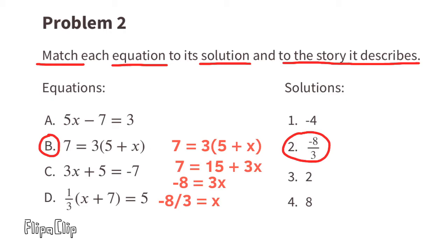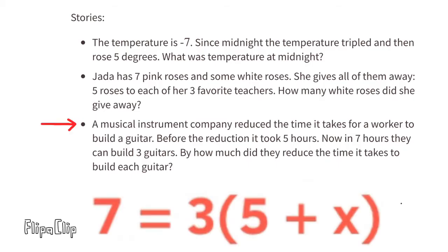The solution to equation b is the second solution, negative 8 thirds. The story described by equation b is the guitar-building story. It now takes 7 hours to build 3 guitars — that's the 7 in the equation. Before the reduction in time, it took 5 hours to build one guitar — that's the 5. The x represents how much they reduced the time per guitar. Since x equals negative 8 thirds, they reduced the build time for each guitar by 8 thirds, meaning they subtracted 8 thirds from the original time.